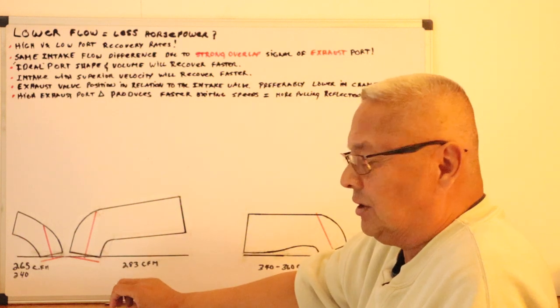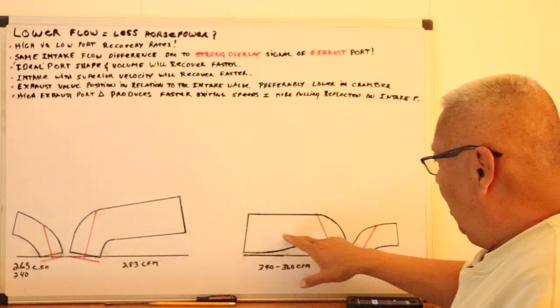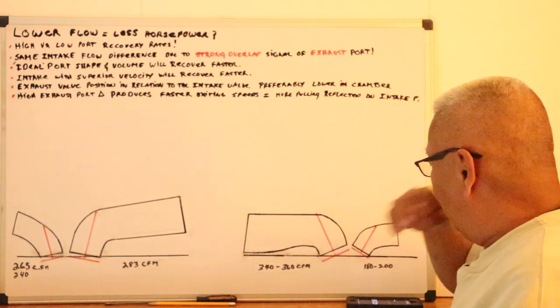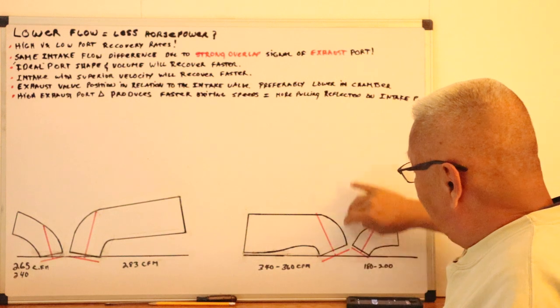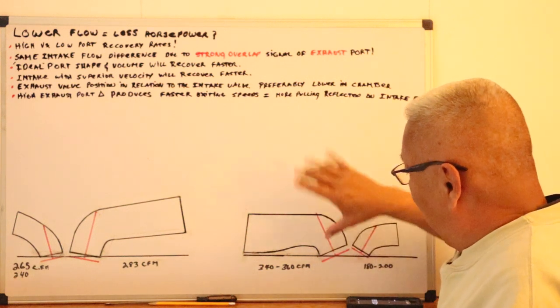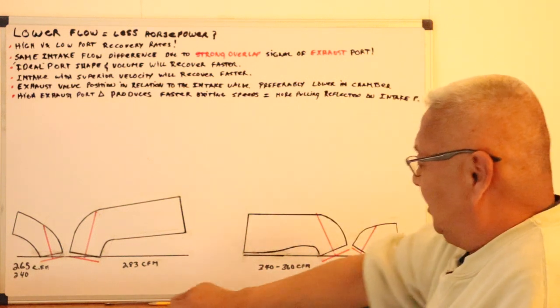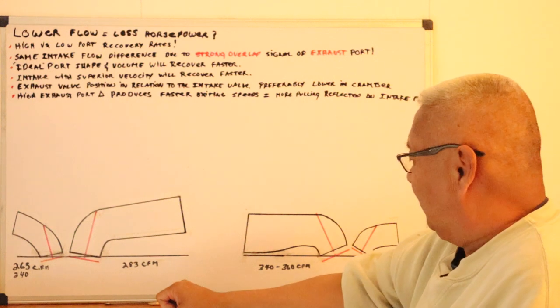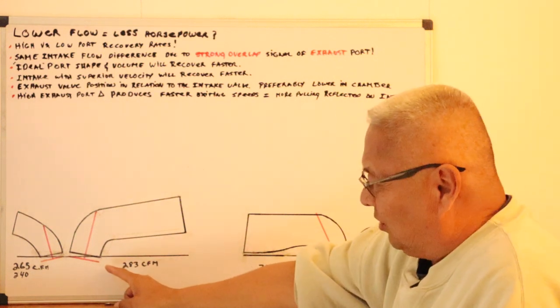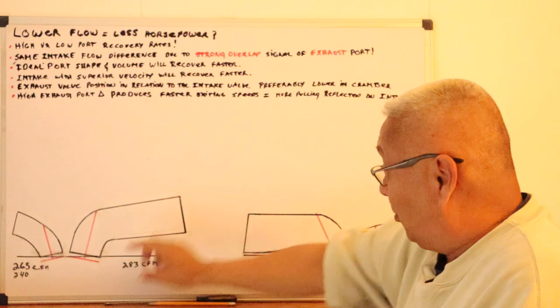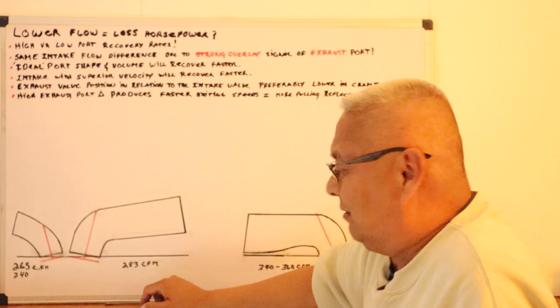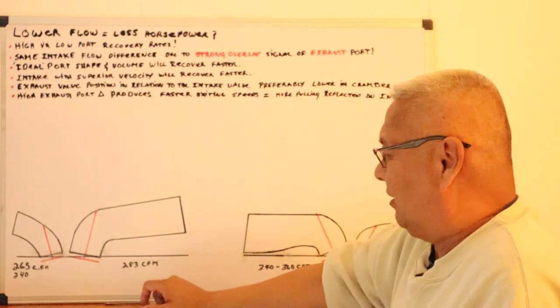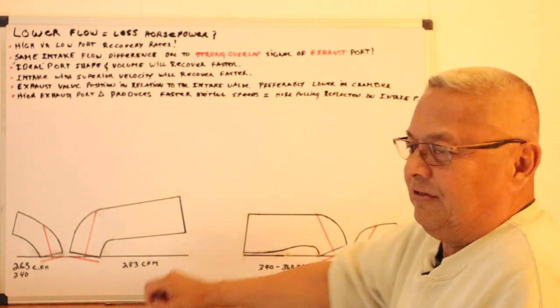But here's the situation that happens. On this 340-360 head, I've experienced this many times, this is on the flow bench, 343, 360 CFM. Impressive. This one here, high port, smaller port, only flows 283, 285. Well, let's say 300 to make it seem like a little bit better. So it's about 40 CFM down.